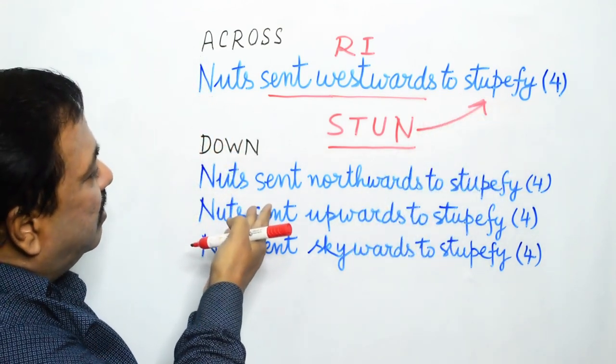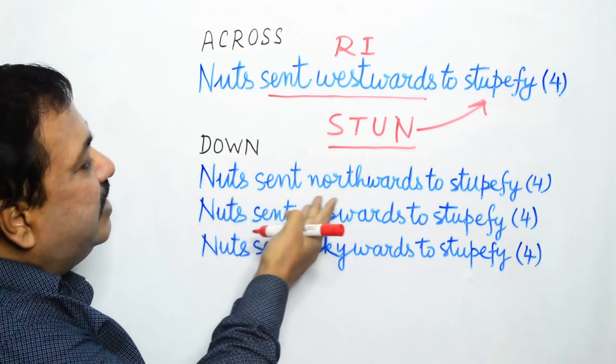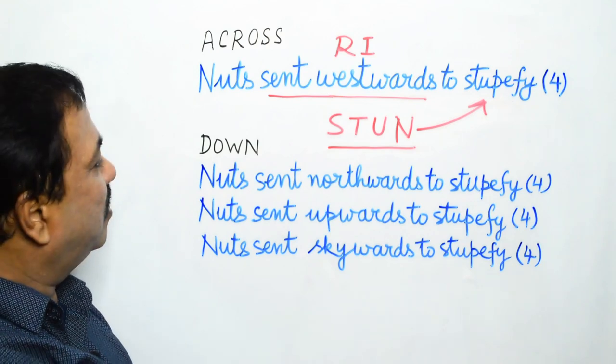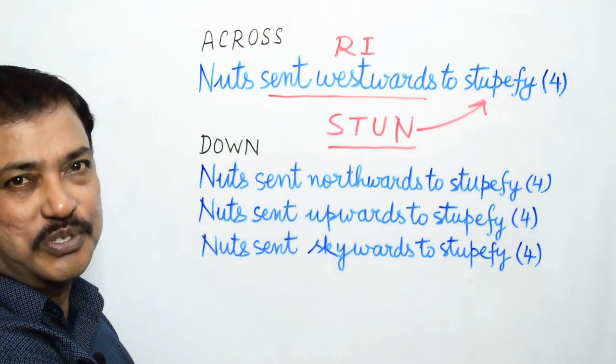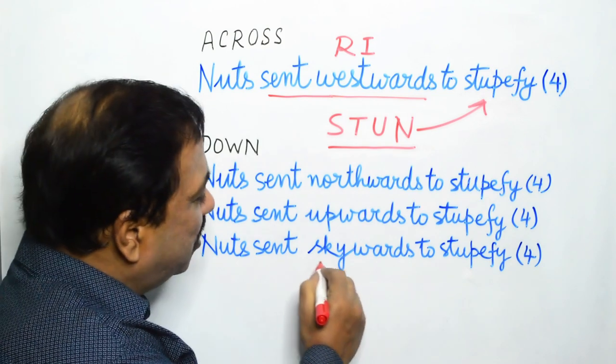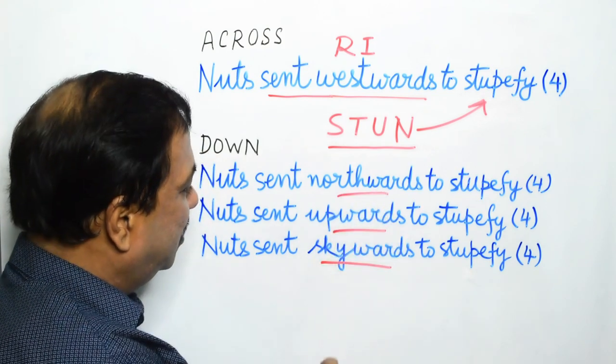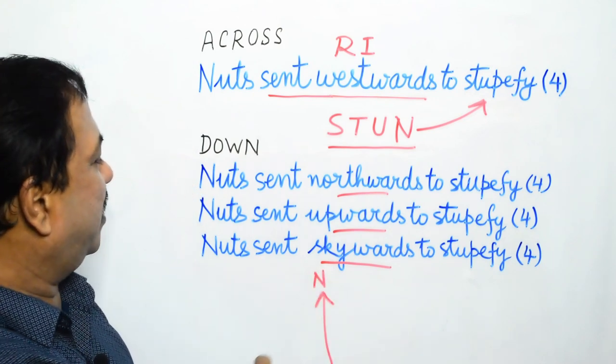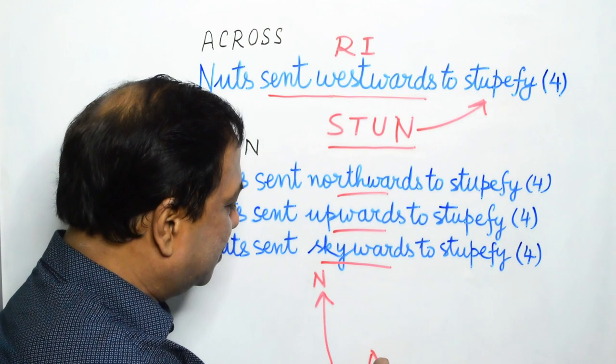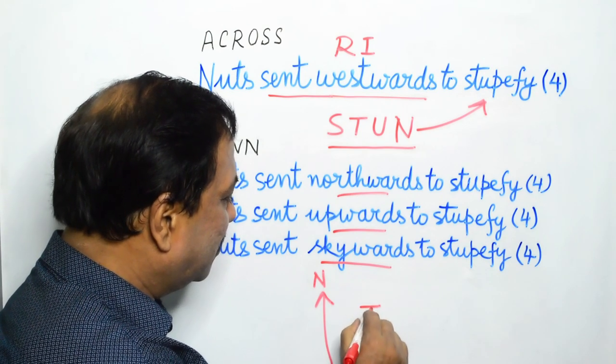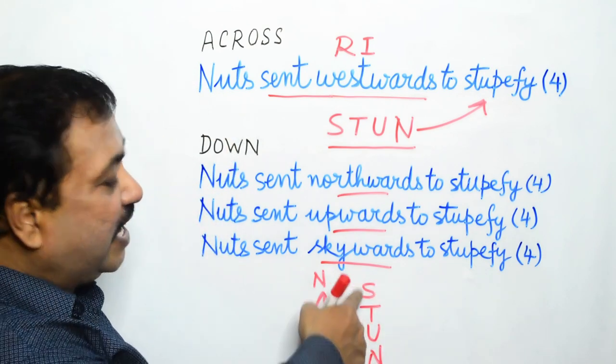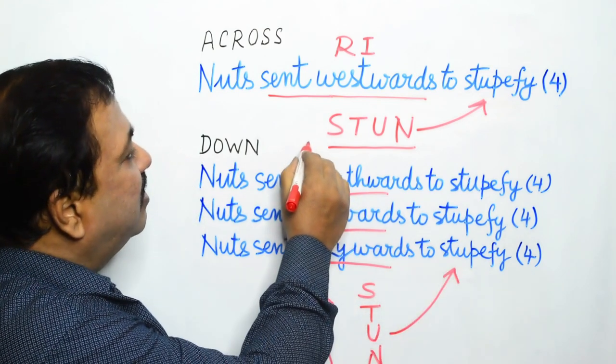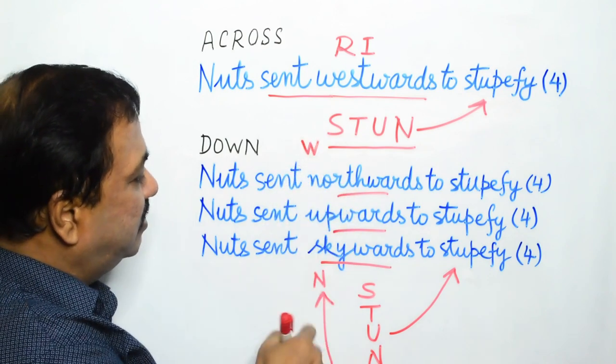We can also have clues like nuts sent northwards or upwards or skywards to stupefy. These can appear in down clues only because of the words like skywards, upwards, northwards, going north. When we write nuts, we get the same word stun, which means to stupefy. This is of course going westwards, this is going northwards.